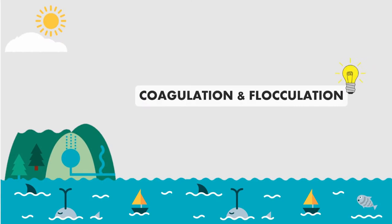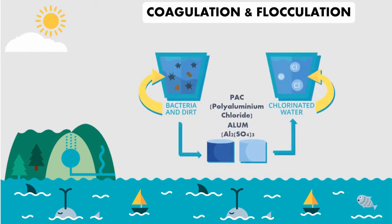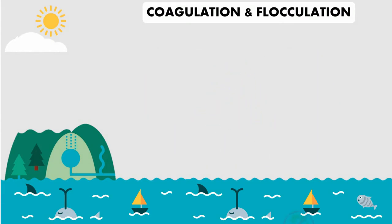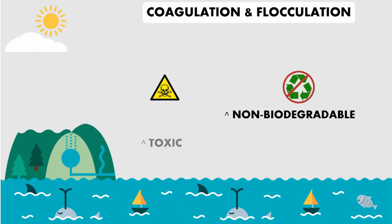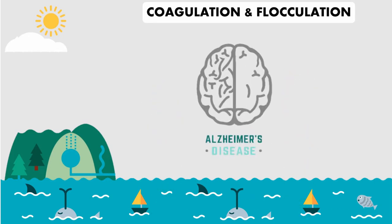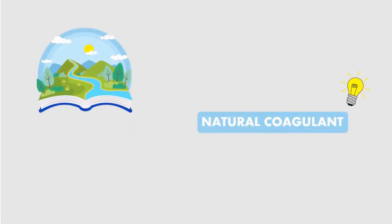The method commonly used in water treatment is coagulation-flocculation using chemical coagulants. Even though it has good performance in water treatment, chemical coagulants cause some problems — they are non-biodegradable, toxic, and can cause Alzheimer's disease. Therefore, an alternative to replace chemical coagulants is needed, and that alternative is natural coagulants.